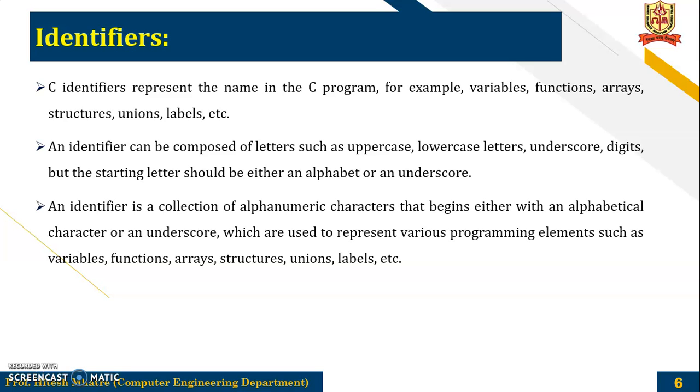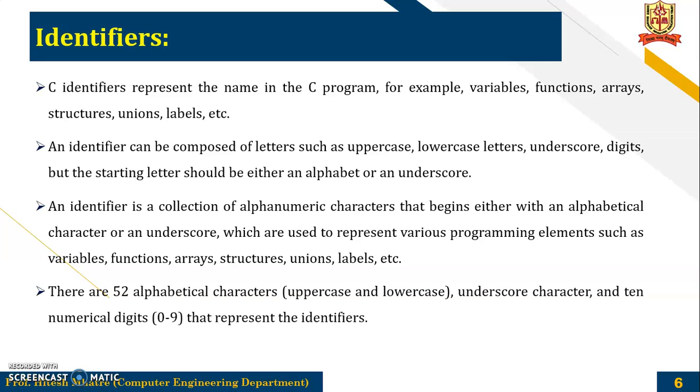An identifier is a collection of alphanumeric characters that begins either with alphabetical character or an underscore, which are used to represent various programming elements such as variables, function, arrays, structures, union and labels. So there are 52 alphabetical characters, 26 uppercase and 26 lowercase, underscore character. So that makes it 53 and the 10 numerical digits, that is 0 to 9 that represents the identifier. So that makes it total 63 alphanumerical characters that represents the identifier. So you can have any combination of these characters.